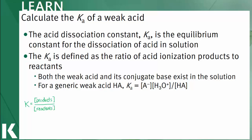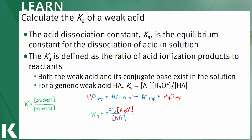All K constants are equal to the concentration of the products over the concentration of the reactants. So for the general acid dissociation reaction HA, the Ka will be the concentration of the conjugate base A⁻, multiplied by the concentration of the hydronium ion, divided by the concentration of the conjugate acid HA. Notice that water does not appear in the K expression — pure liquids and solids do not factor into K equations.